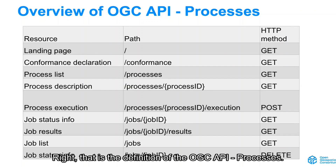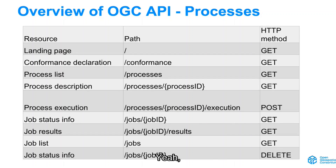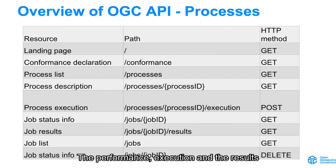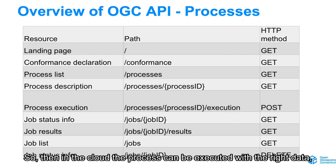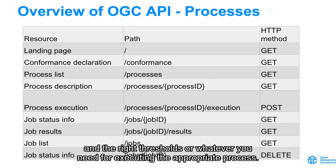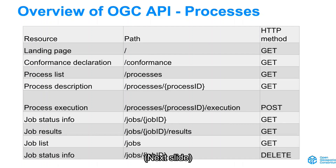That's the definition of OGC API Processes. You have the performance and the execution, the results, and where you are defining the frame so that in the cloud the process can be executed with the right data and the right parameters — for example, thresholds or whatever you need for executing the appropriate process.